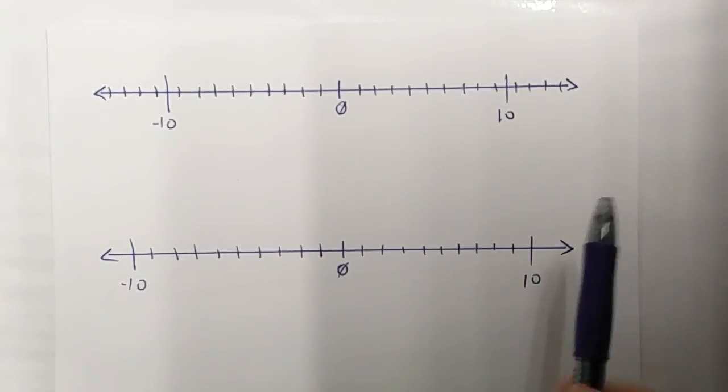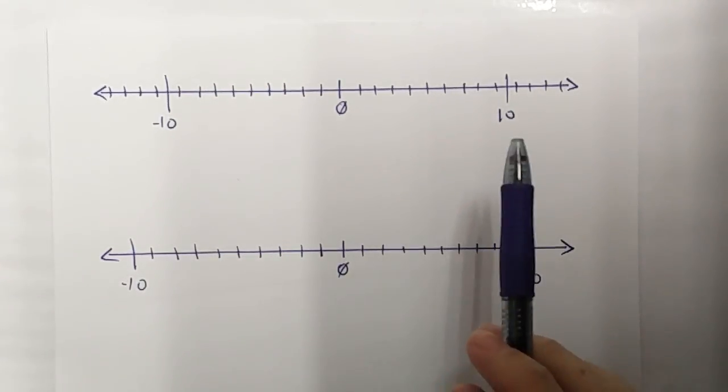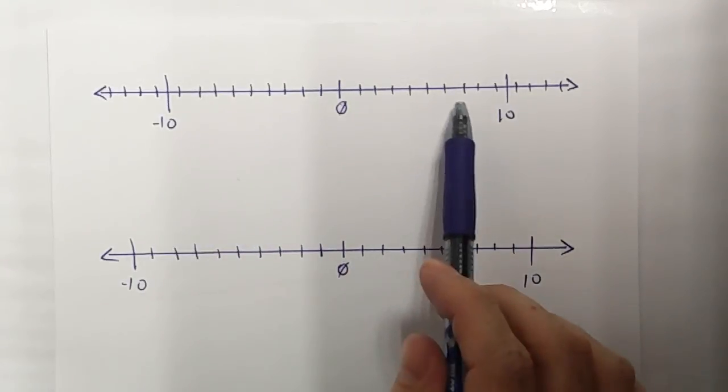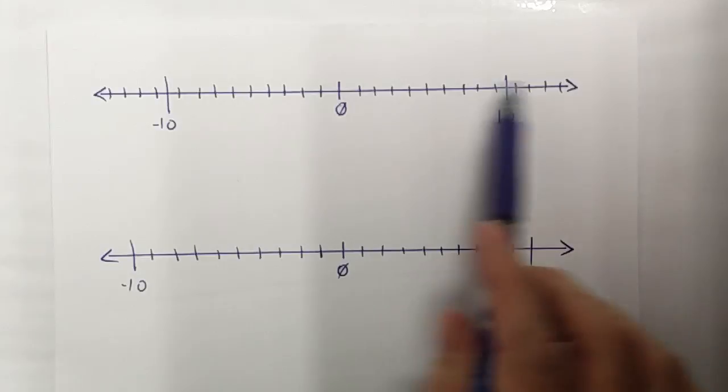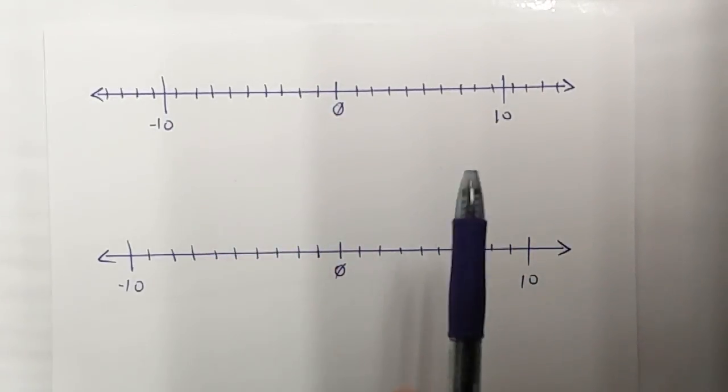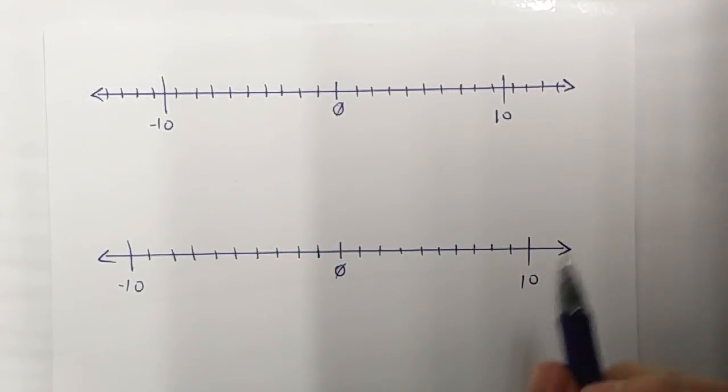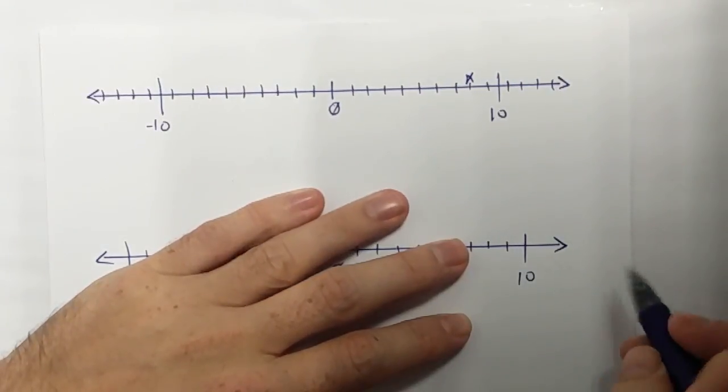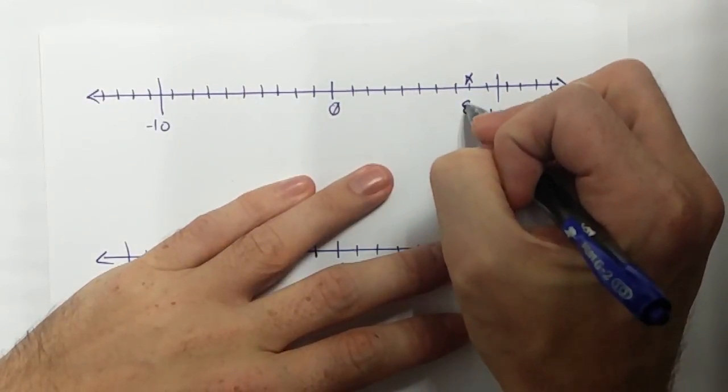Previously we learned that an integer can be a position, a place on the number line. For example, here is my number line. I have integers which are either positive or negative values. And I could have a position right over here, and this x...